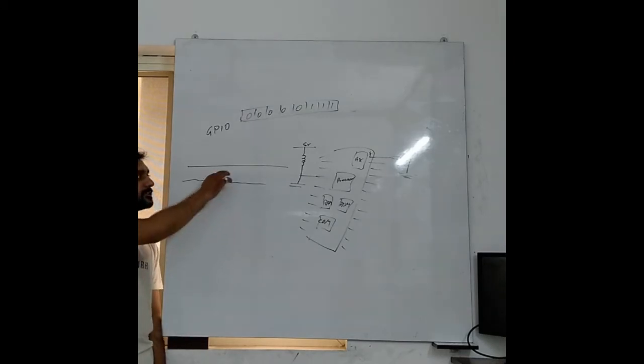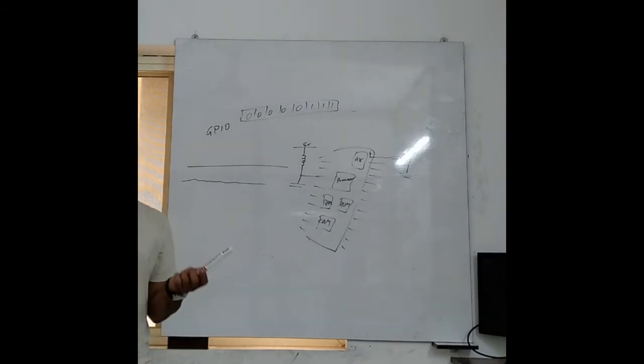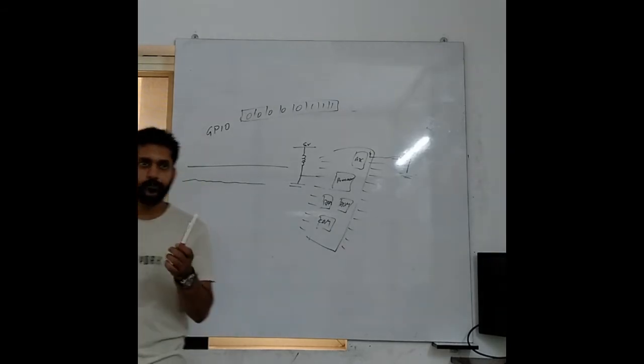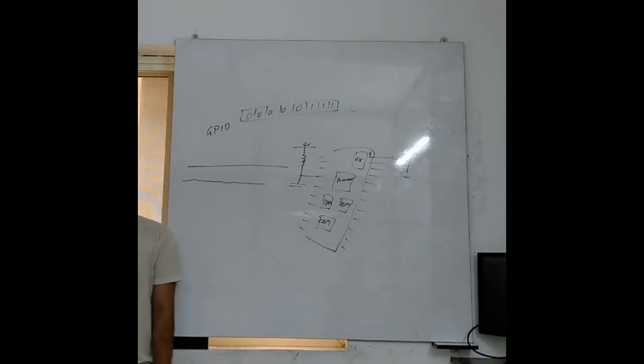So ADC will take this as reference. Right now it is 5 volts. And it is a 10 bit ADC. All ADCs will have the resolution 10 bit, 12 bit, 16 bit like this. So that is saying in how many steps it can divide the voltage.